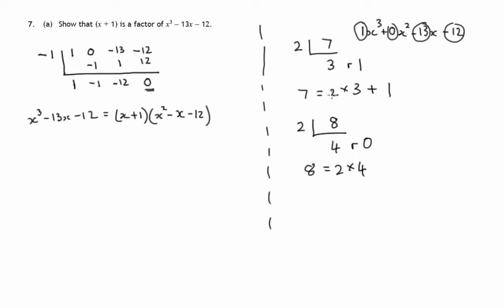If you look at this case here, 2 into 8 goes 4, so 8 is 2 times 4, remainder 0. Now that's very similar to this one,